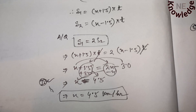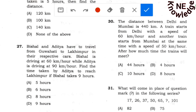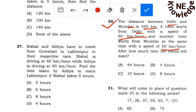Question number 30: The distance between Delhi and Mumbai is 440 km. A train starts from Delhi with a speed of 60 km per hour and another train starts from Mumbai at the same time with a speed of 50 km per hour. After how much time will the two trains meet?